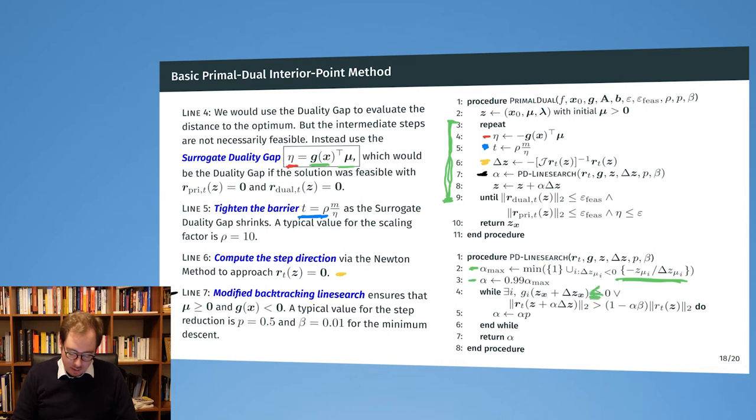We repeat as long as we don't have achieved that the g_i's are all smaller than zero. Also here we check whether our residual has actually improved, so whether our residual has approached the zero vector to some degree by taking the two norm, the Euclidean norm, with the distance to the zero vector. Here we have the line search, and this is the whole primal-dual algorithm.